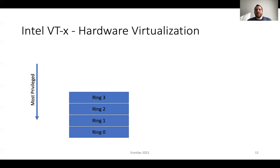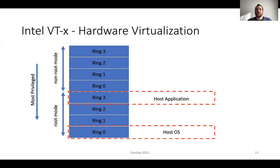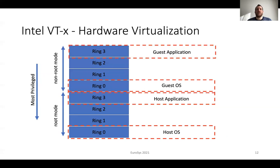Intel VTX is a family of hardware virtualization extensions that targets the acceleration of virtual machine management. Except from the four traditional protection domains, it includes four additional protection domains separated into root and non-root mode. The root mode is intended to run the host operating system and the host application. The non-root mode is intended to run the guest. Even in this case, a transition from ring 3 to ring 0 in both modes requires a trap. In order to change mode, for example from non-root to root mode, a VM exit is required. This is a heavy operation compared to a trap.